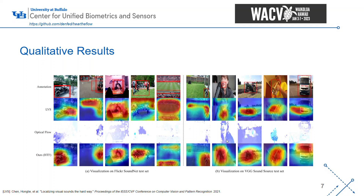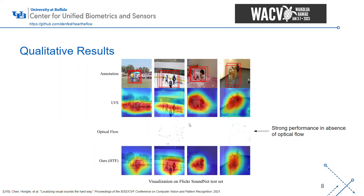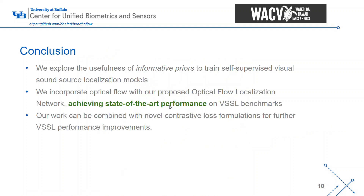The model uses optical flow features to better attend to and localize where sound is coming from. Given the cross-attention architecture of our network, the model also performs well when there actually isn't any meaningful optical flow, outperforming previous methods in this regard as well. Overall, this paper uses the idea of informative priors to improve the training of self-supervised visual sound source localization models, and specifically we create this optical flow localization network that achieves state-of-the-art performance. Thank you.